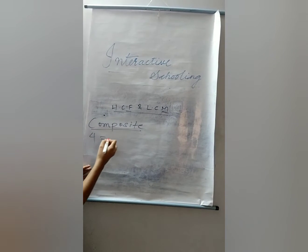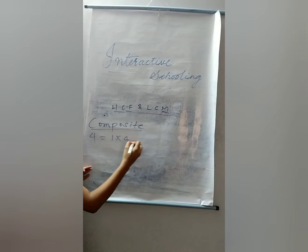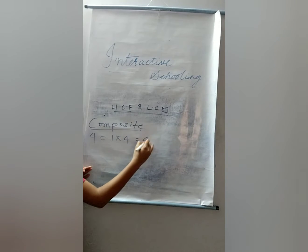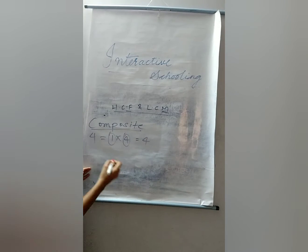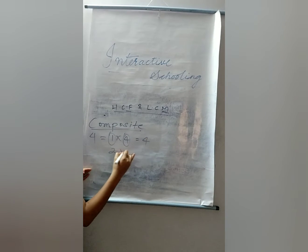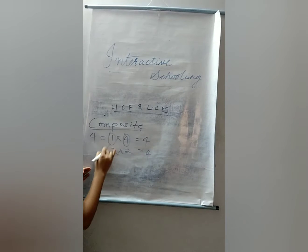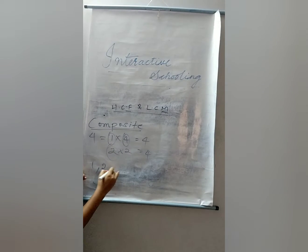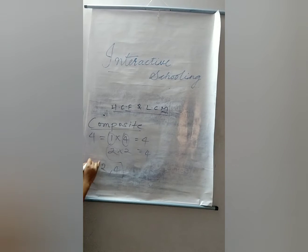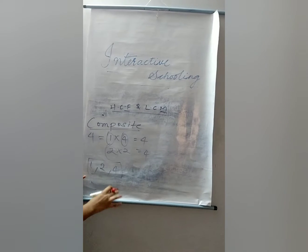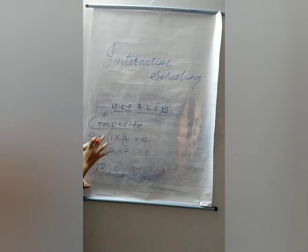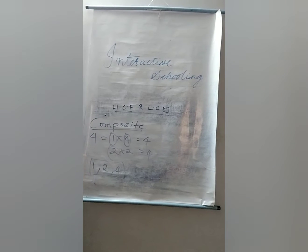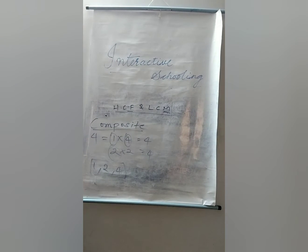So if you take 4, we have 1 into 4 which is equal to 4 — so 1 and itself — and then 2 into 2 which is equal to 4. Its factors are 1, 2, and 4. These are the factors of 4, so 4 is a composite number.